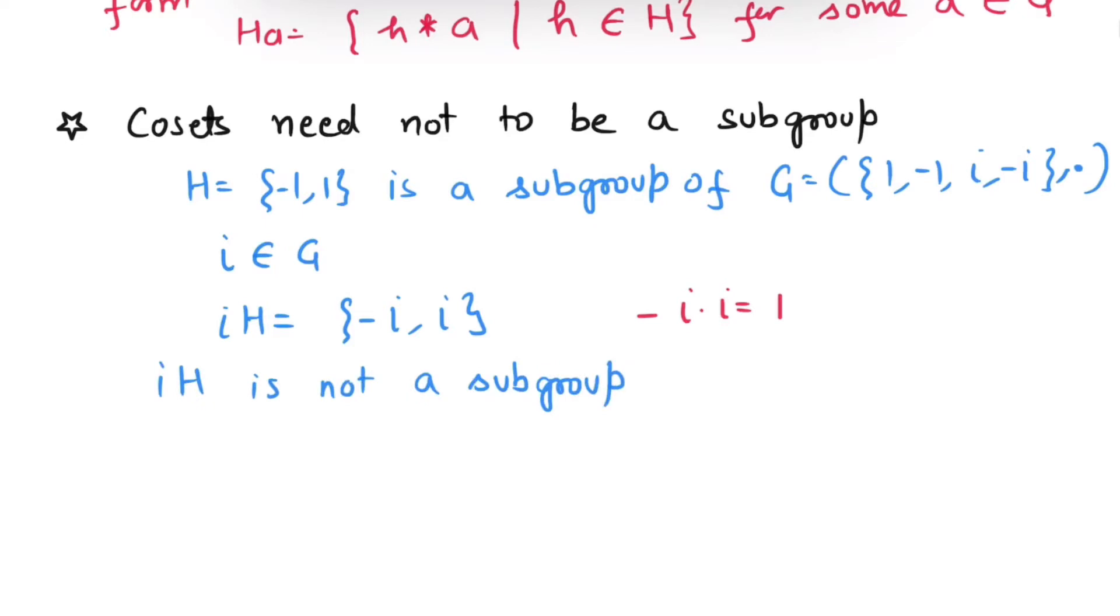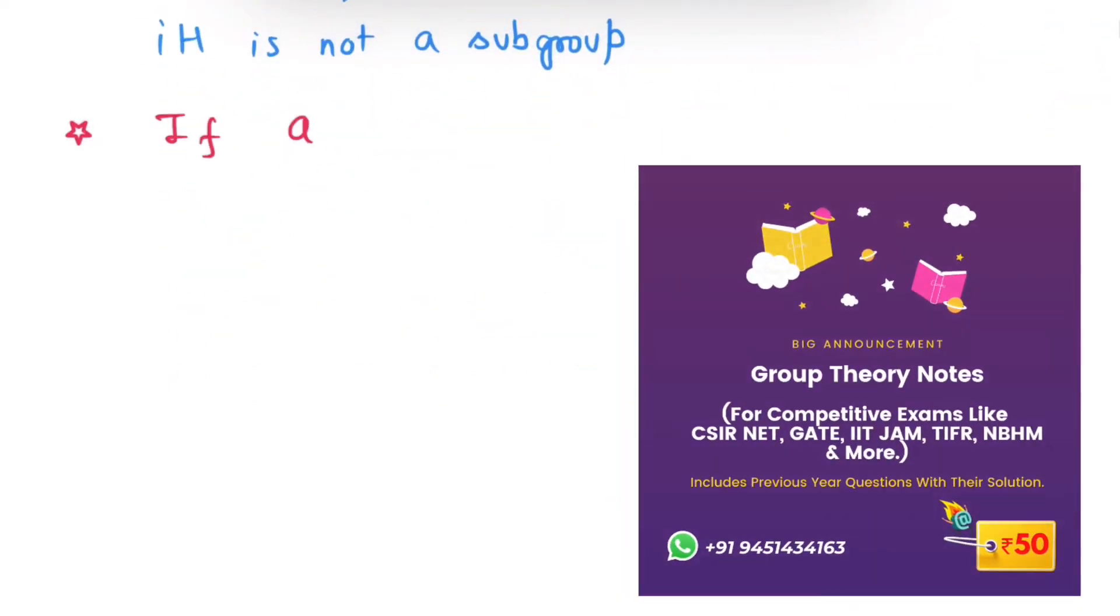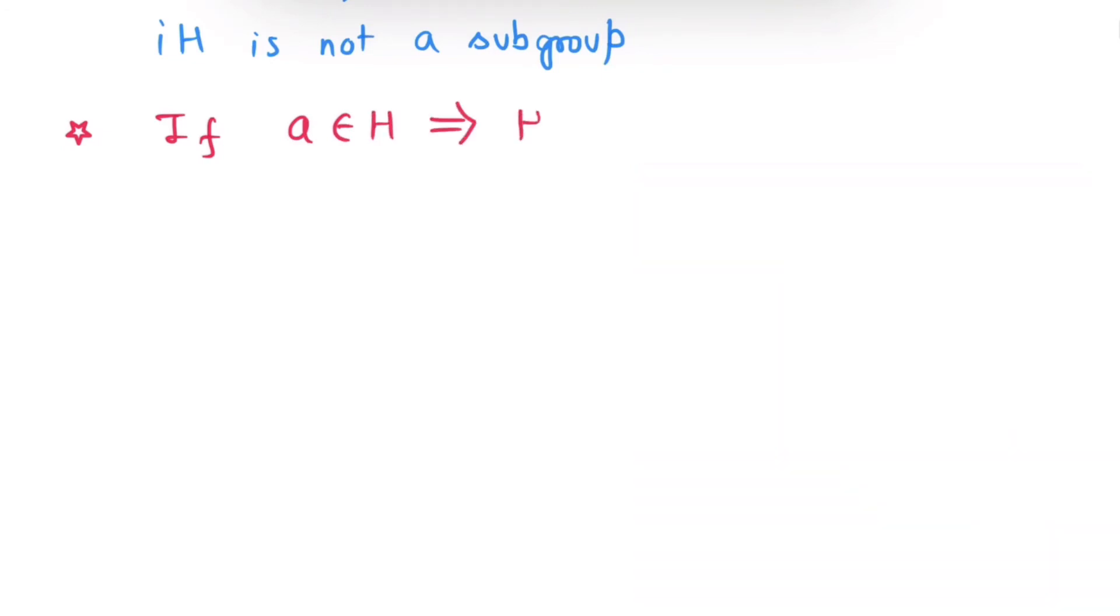Now, let us see some important properties of cosets. First one is, if A belongs to H, then this implies HA equals to H or AH equals to H.